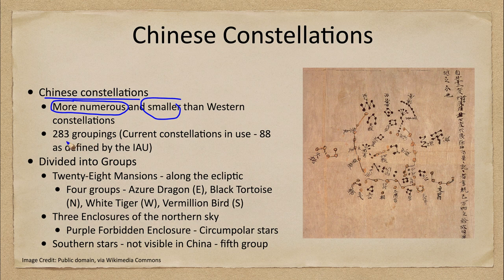Here we see a few of those. In fact, the regions around the North Pole were very prominent — the northern polar constellations, those that remained above the horizon at all times, were very important in Chinese culture.